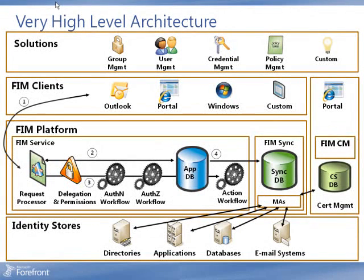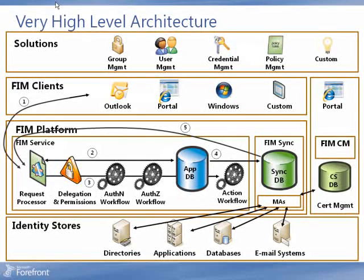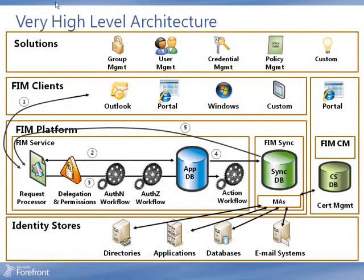The FIM Sync Service has a privileged position in that it's able to read directly from the database. Although when it writes it still goes through the service, it's privileged in that it doesn't have to go through authentication or authorization, though it may still fire off action workflows. As a use case, using the portal to enter a new user: that new user is submitted as a request and, provided the person has permission and no special authentication or authorization workflow is required, it is written into the database. Subsequently, that person may be synchronized with other systems via action workflows.